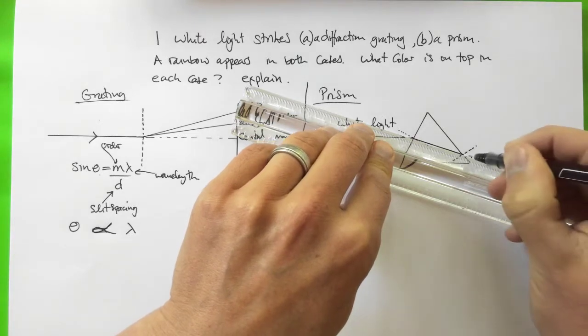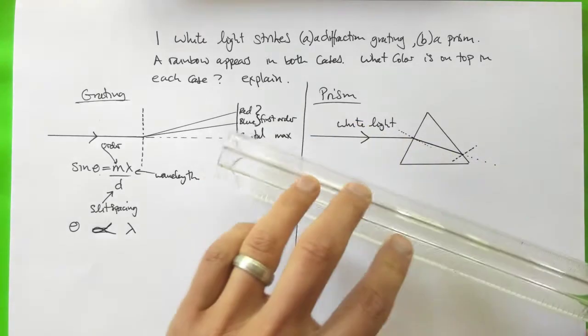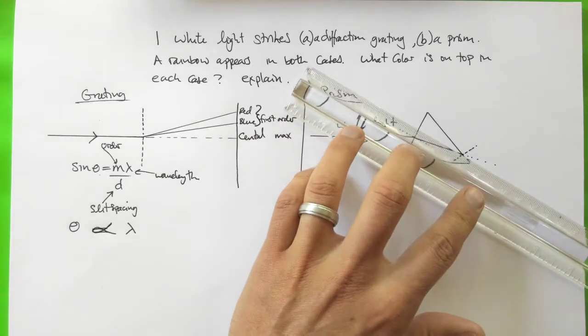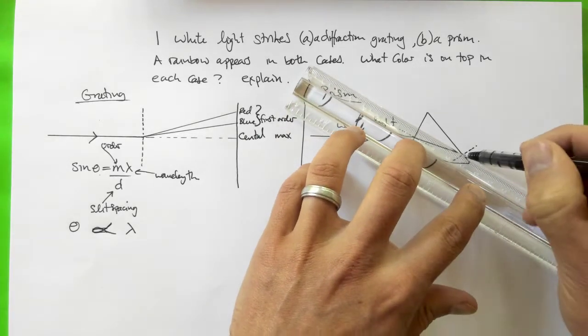If it went straight it would follow where my ruler is showing now, so I'll just draw that as dots. It does not follow that direction. Instead it bends away from the normal and so it goes this way.